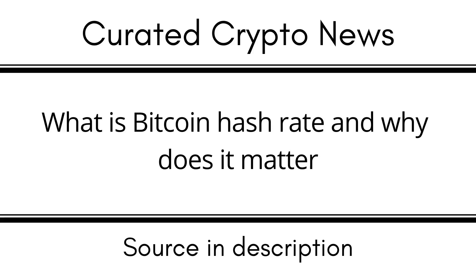The Bitcoin network's mining difficulty is automatically adjusted after every 2,016 blocks have been mined. Depending on the number of miners and their total hashing power, the difficulty can be adjusted either higher or downward. Although the precise hashing power of Bitcoin is unknown, it can be inferred from the number of blocks currently being mined and the level of block difficulty.